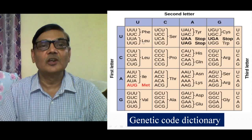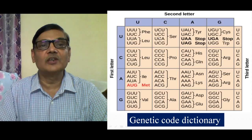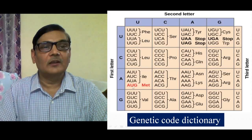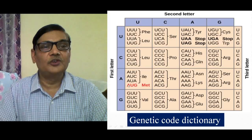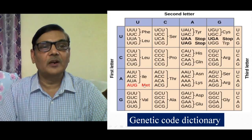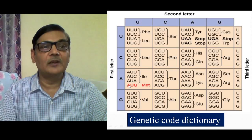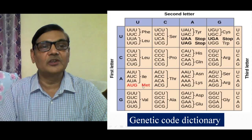Since there are 20 amino acids, you can count exactly 20 amino acids present in this table. The codon AUG encodes for methionine, and methionine is the initiator codon — that is, protein synthesis actually starts from the 5' end by utilizing the first codon AUG. So AUG codes for methionine and is also the initiator codon.